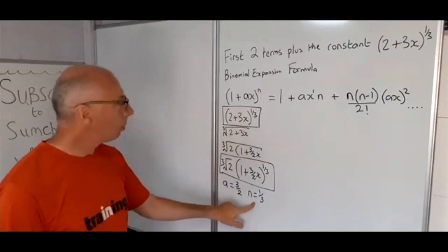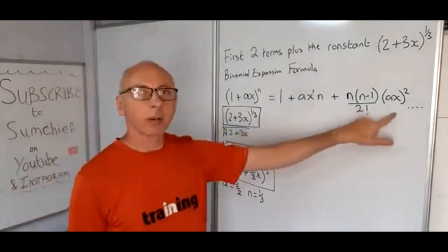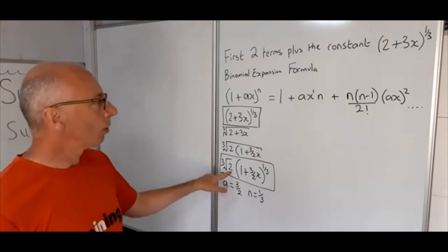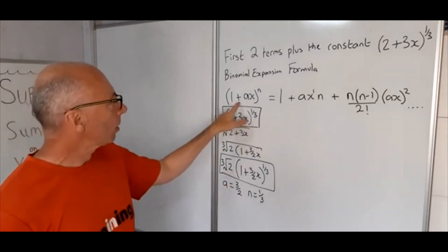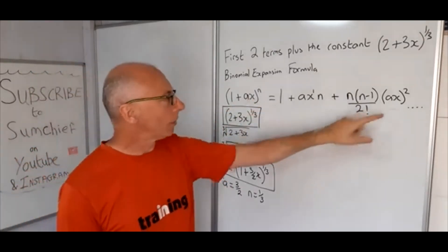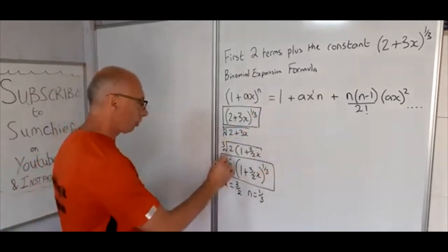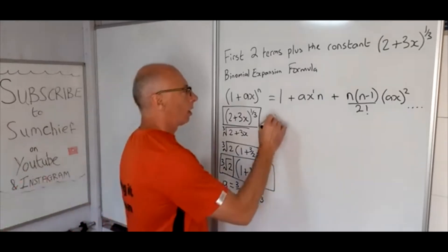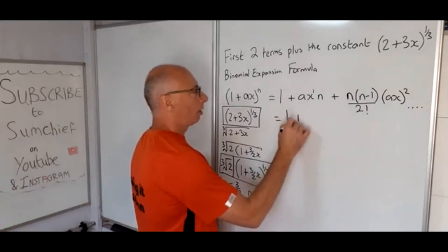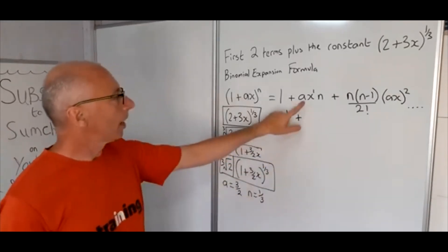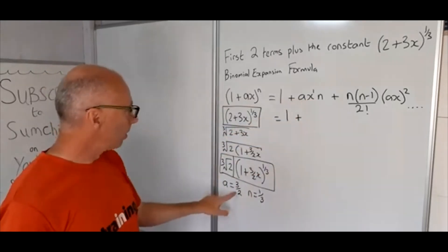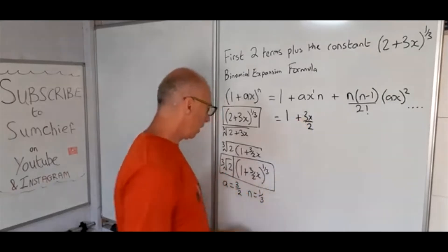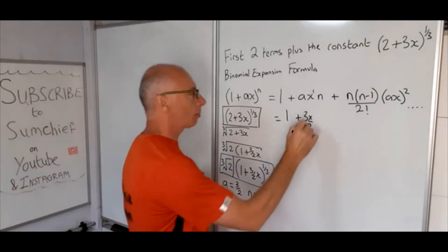All we got to do now is plug these values into our formula and multiply through by the cube root of 2. First let's go through this part of the formula and then we can multiply through with the cube root of 2 afterwards. So we end up with 1 plus ax, well ax is 3x/2, and times by n so multiply this by 1/3.